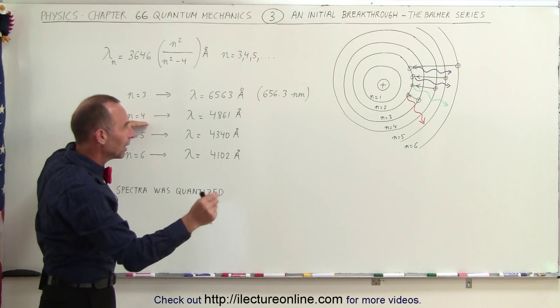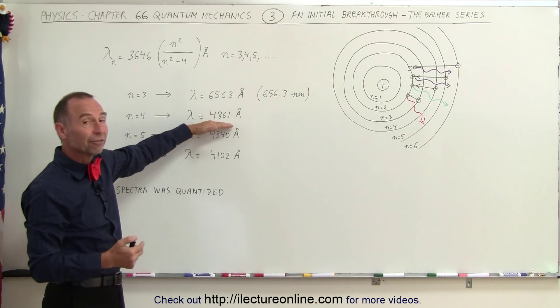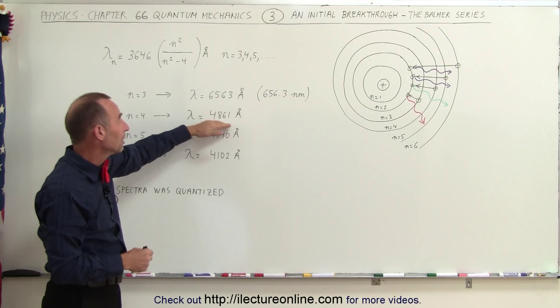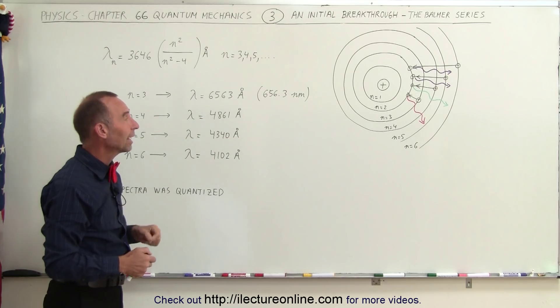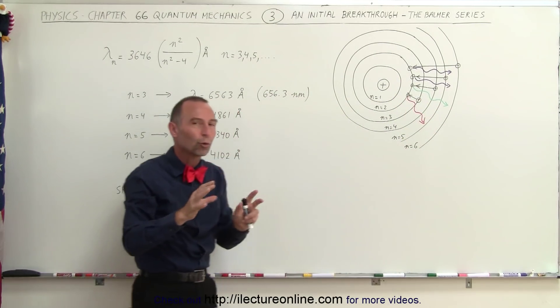When things jumped down, when electrons jumped down from the fourth level down to the second level, the wavelength given off, or the light given off, had a wavelength of 486.1 nanometers, or 4861 angstroms, and then that associated with a color that was kind of turquoise green.